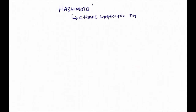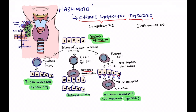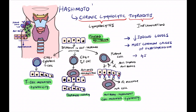Hashimoto's, also known as chronic lymphocytic thyroiditis, involves lymphocytes causing inflammation of the thyroid. On screen there is an illustration of what happens. It is caused by decreased iodine levels and is the most common cause of hypothyroidism, usually occurring in patients aged 45 to 65 years.